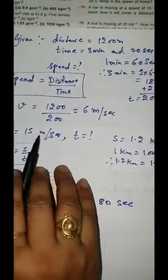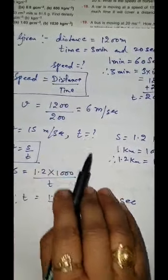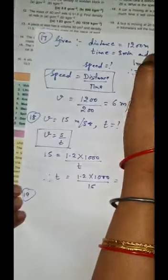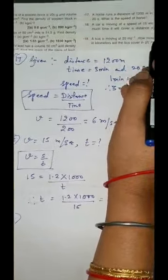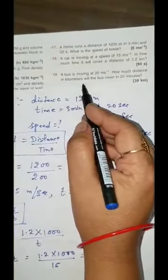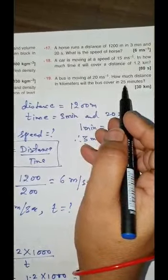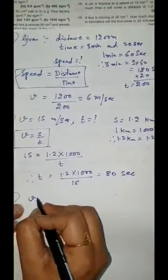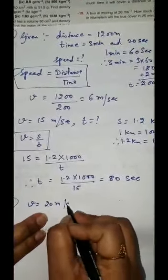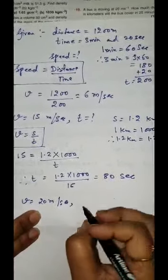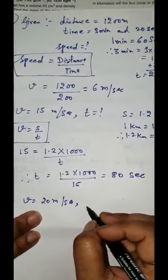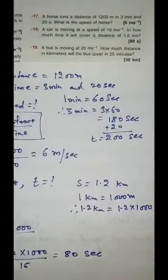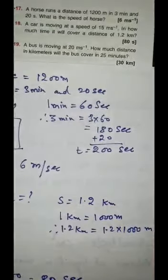Now again see the unit — here it is meter per second, so your time will come in seconds. Now 19th numerical. A bus is moving at 20 meter per second. How much distance in kilometers will the bus cover in 25 minutes? Speed is 20 meter per second. How much distance we have to find — distance we have to find, time is 25 minutes.